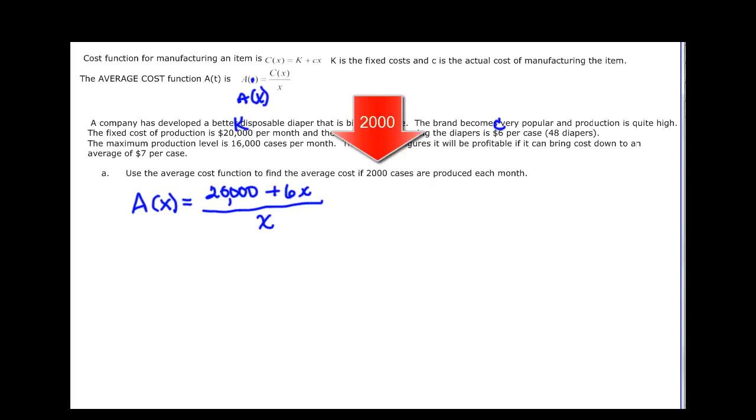We want to know what the average cost function is. So a(x) in general would be k, which is 20,000, plus 6 times x, all over x. But we know x is going to be 2,000. When we do that, we end up with 32,000 over 2,000, which is 16. So the average cost function, if 2,000 cases are made, would be $16.